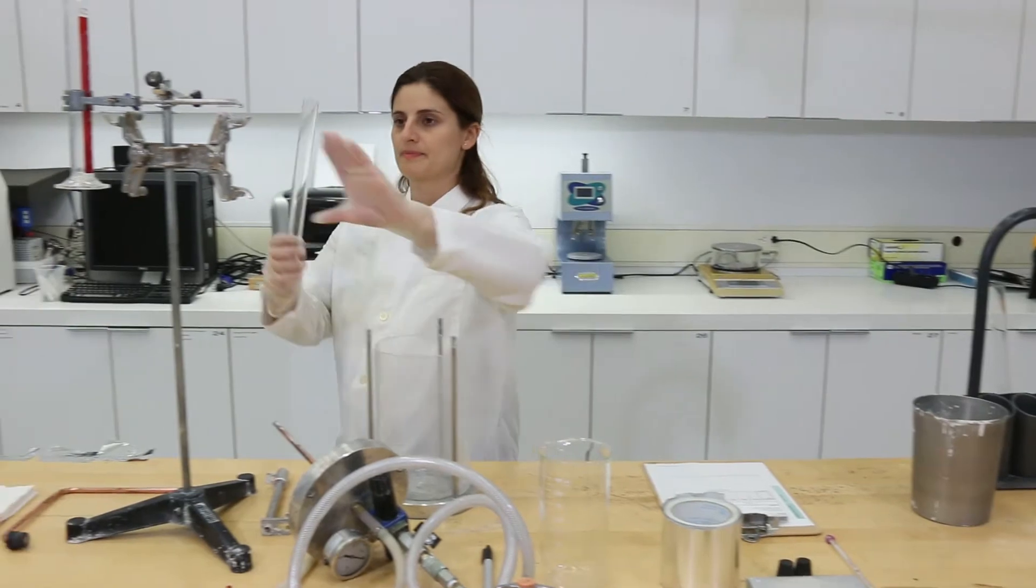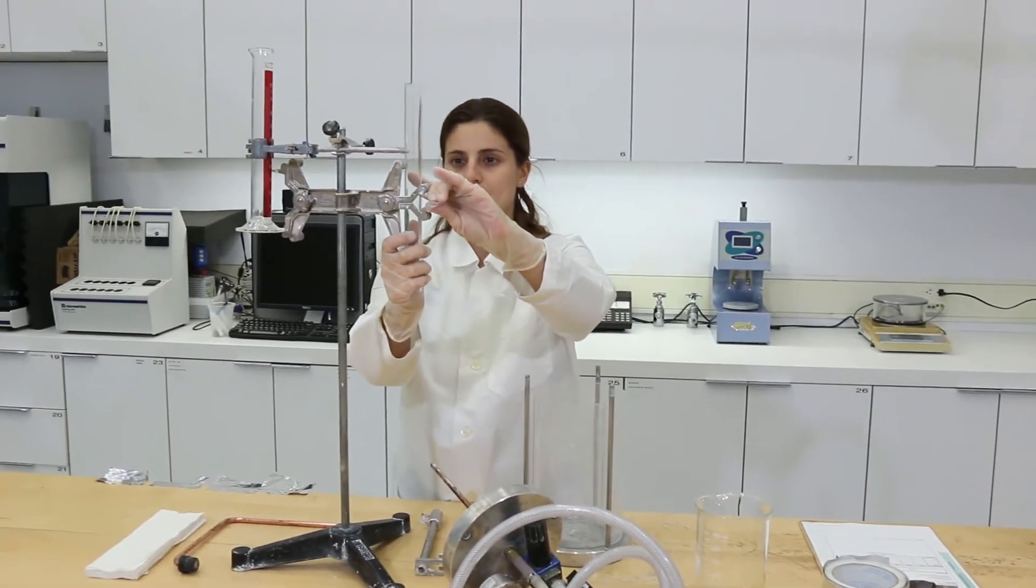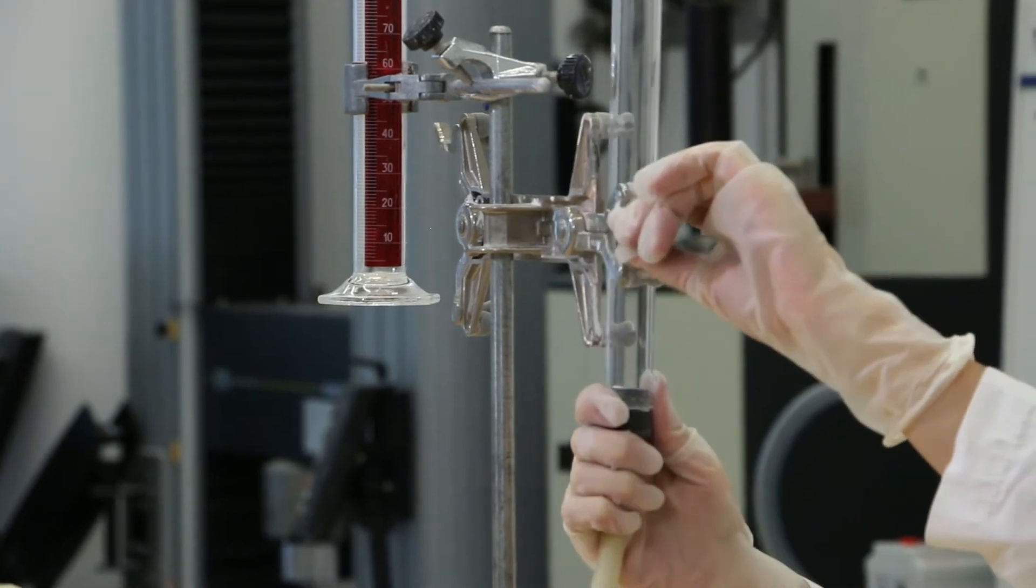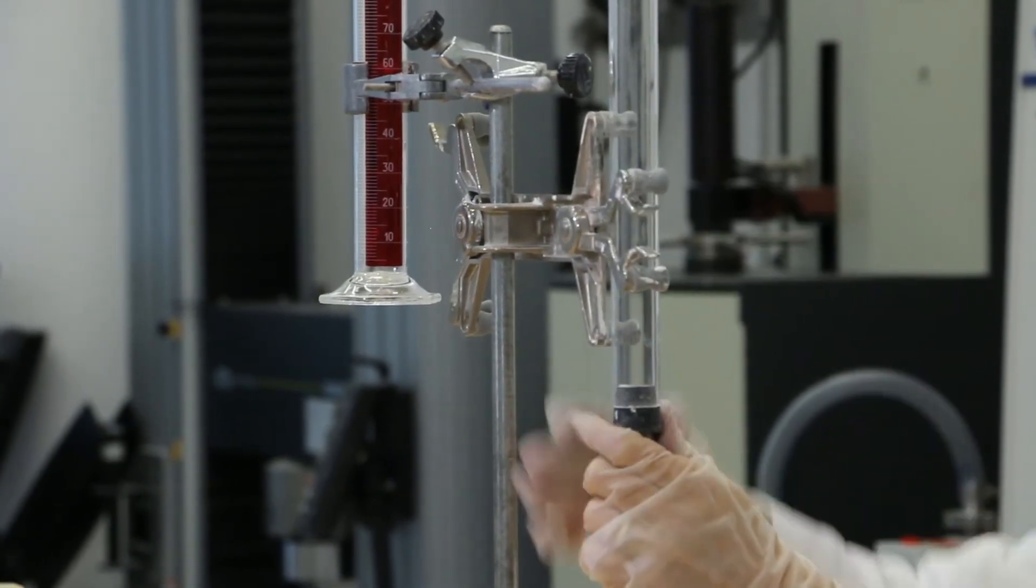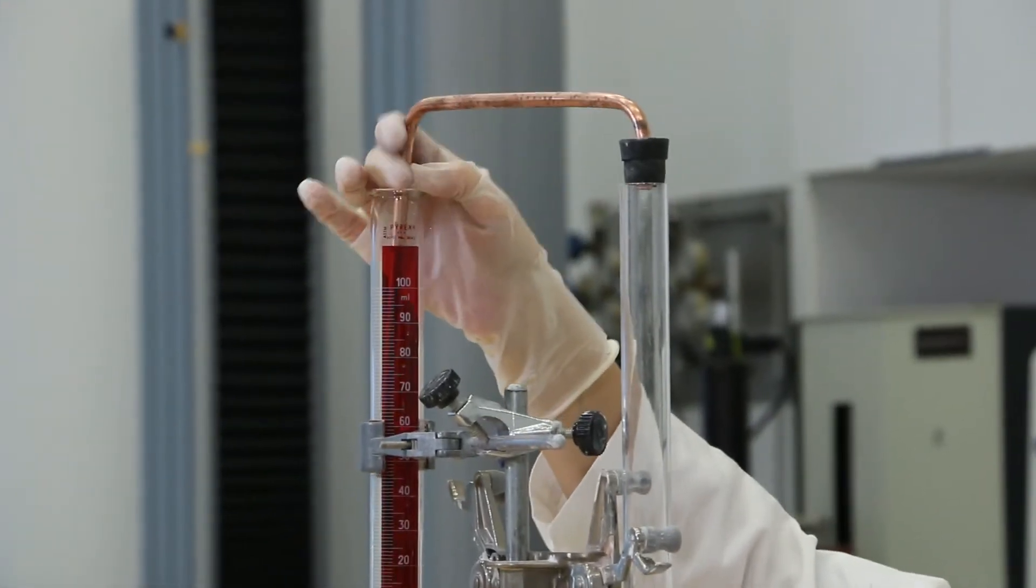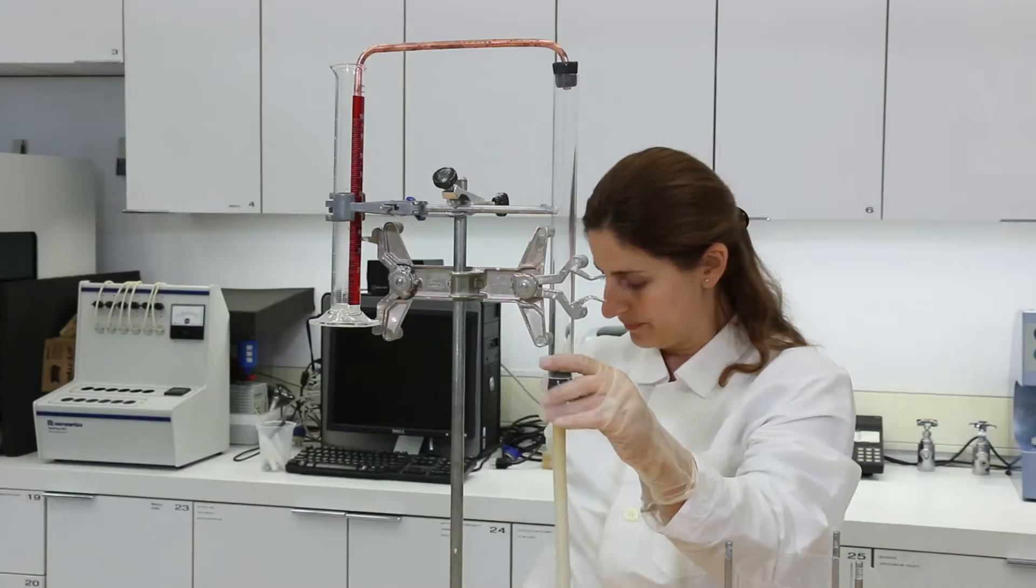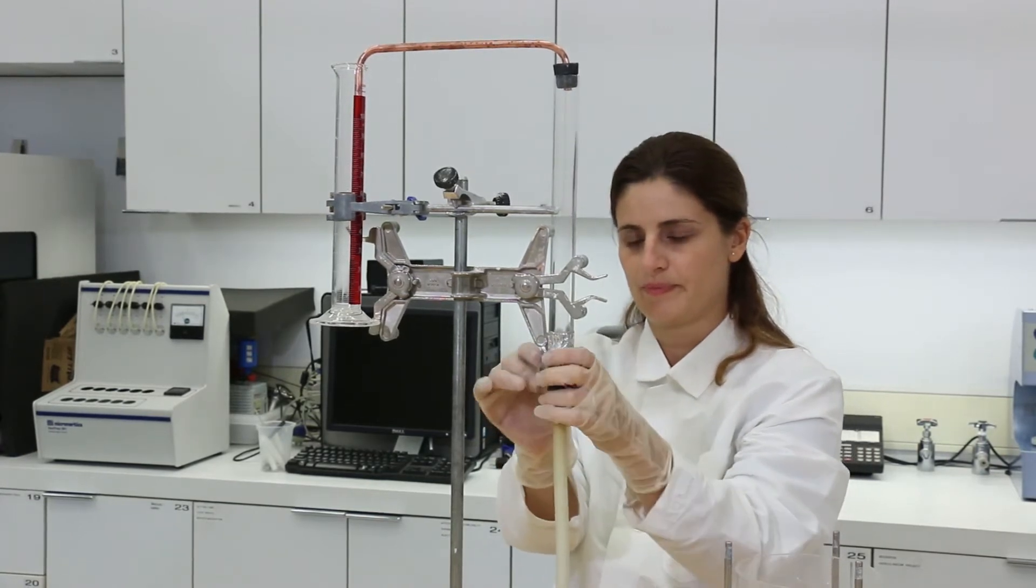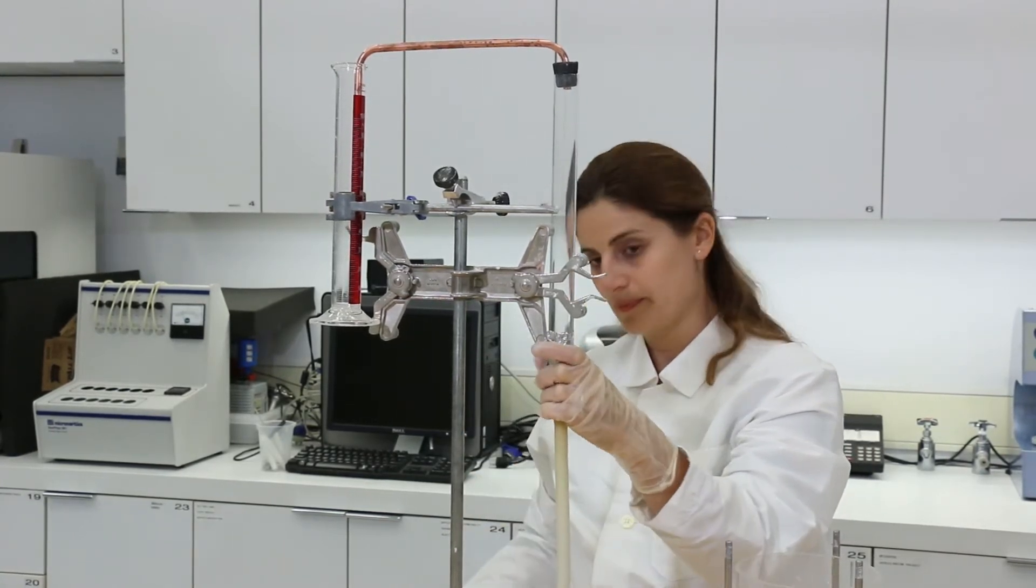First, place the empty column on the stand. Attach the bottom rubber stopper connected to the flexible joining tube, and then the top one connected to the overflow tube. Next, secure the column and the bottom stopper using the adhesive tape.